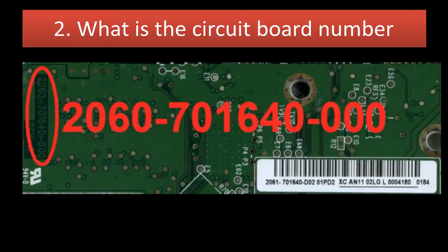What is the circuit board number? The circuit board number is the circuit board ID number. As long as this number is the same, the boards are the same in hardware. For this circuit board, the number on the board reads as 2060-701640-000, and the number on the sticker reads as 2061-701640.